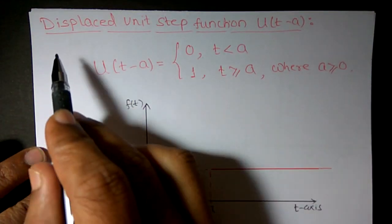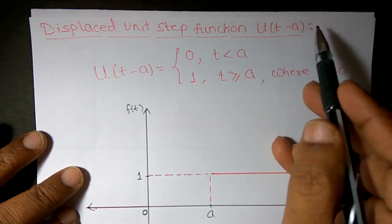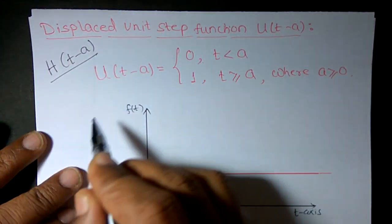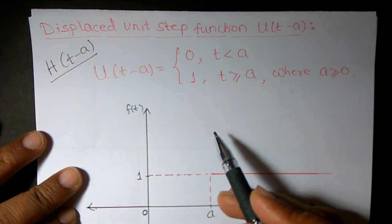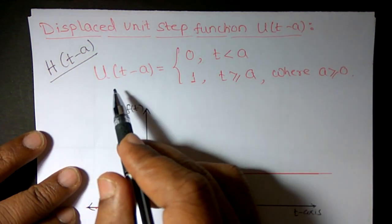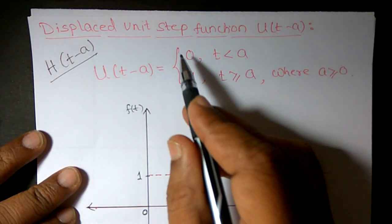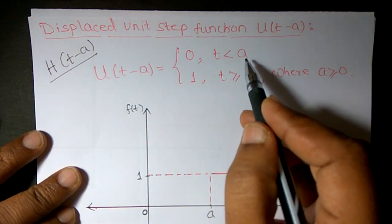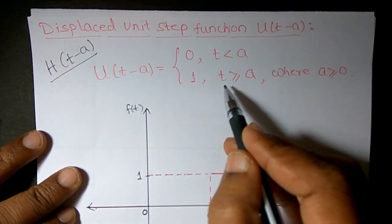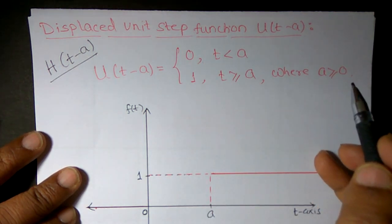Now we want to define the displaced unit step function, usually denoted by u(t - a) or another notation is h(t - a). Mathematically, u(t - a) equals 0 when t is strictly less than a, and u(t - a) equals 1 when t is greater than or equal to a, where a is a constant greater than or equal to 0.